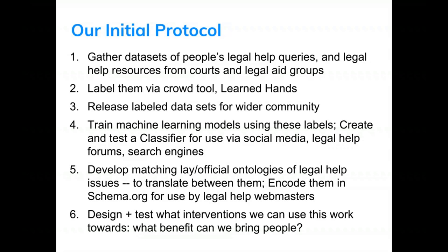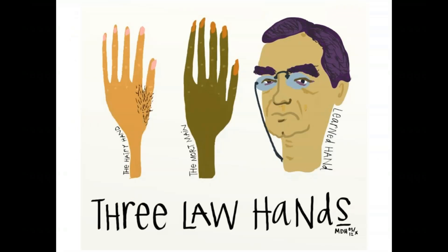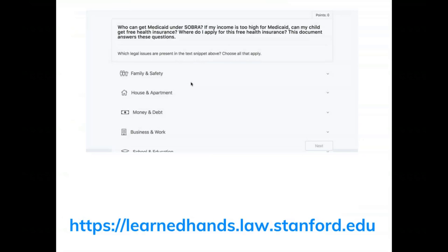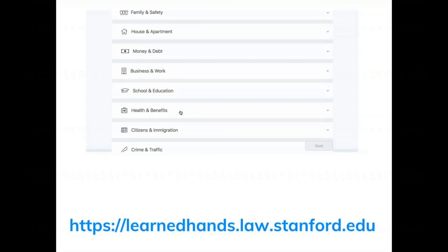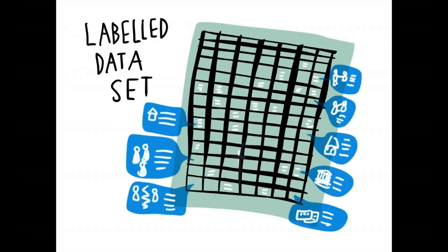We're taking examples from ABA legal questions and Reddit legal advice questions, and using a tool to crowdsource the labeling of those questions. Once we've labeled this data, we'll release part of it to the public so that other people can train machine learning models on it. The labeled data will look like a question from John Doe labeled as: has a housing issue, has a family law issue, does not have a torts issue, and so on.